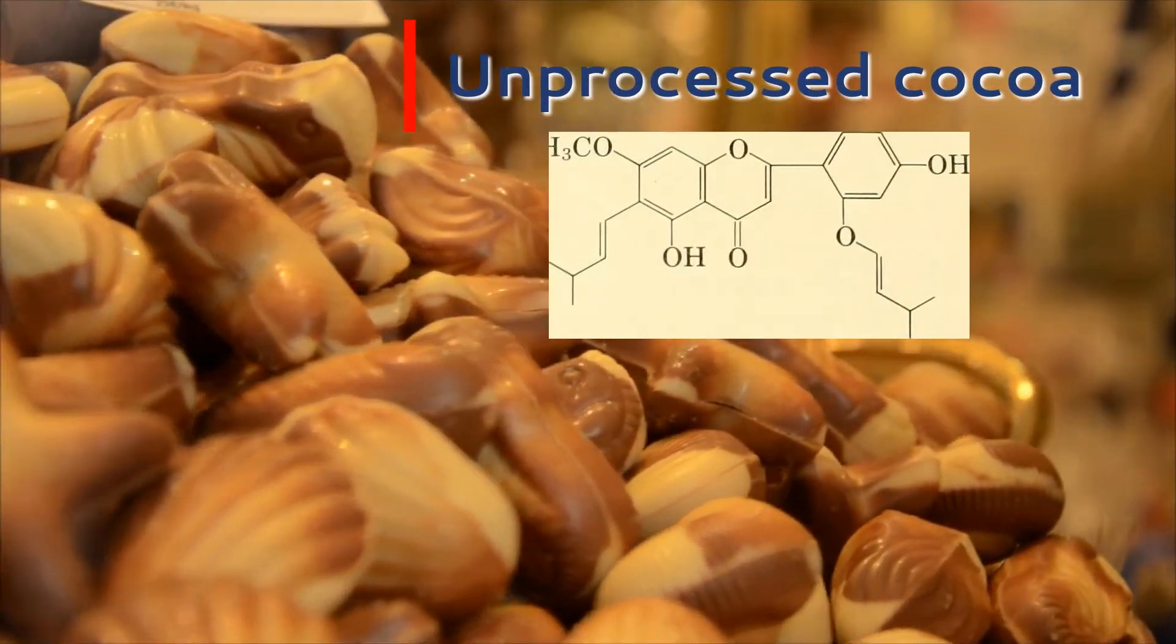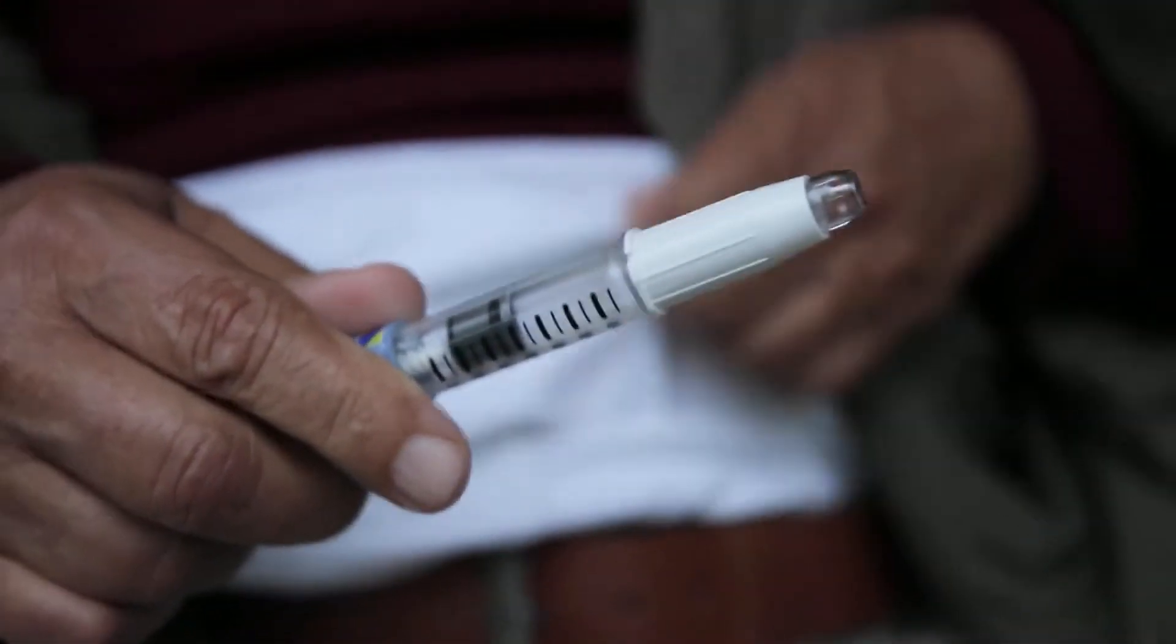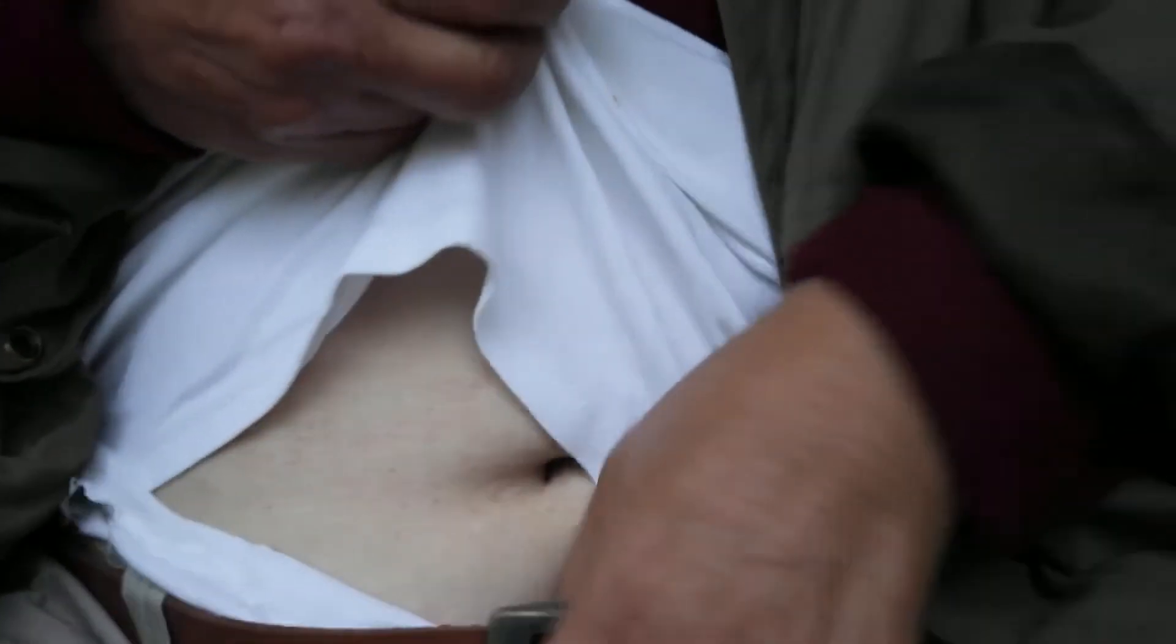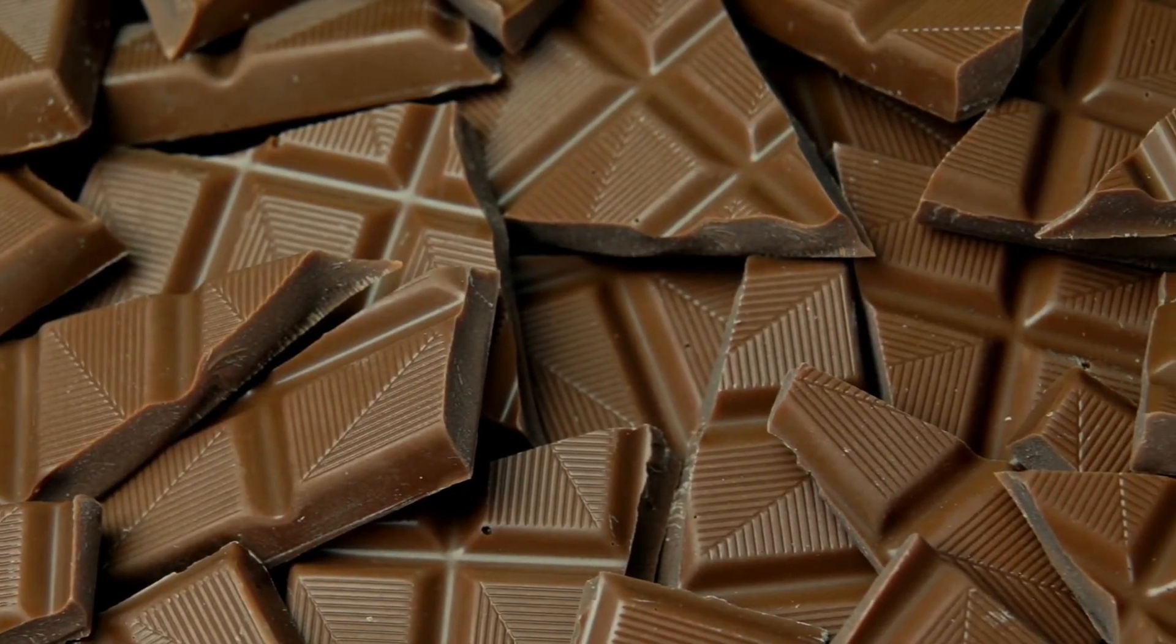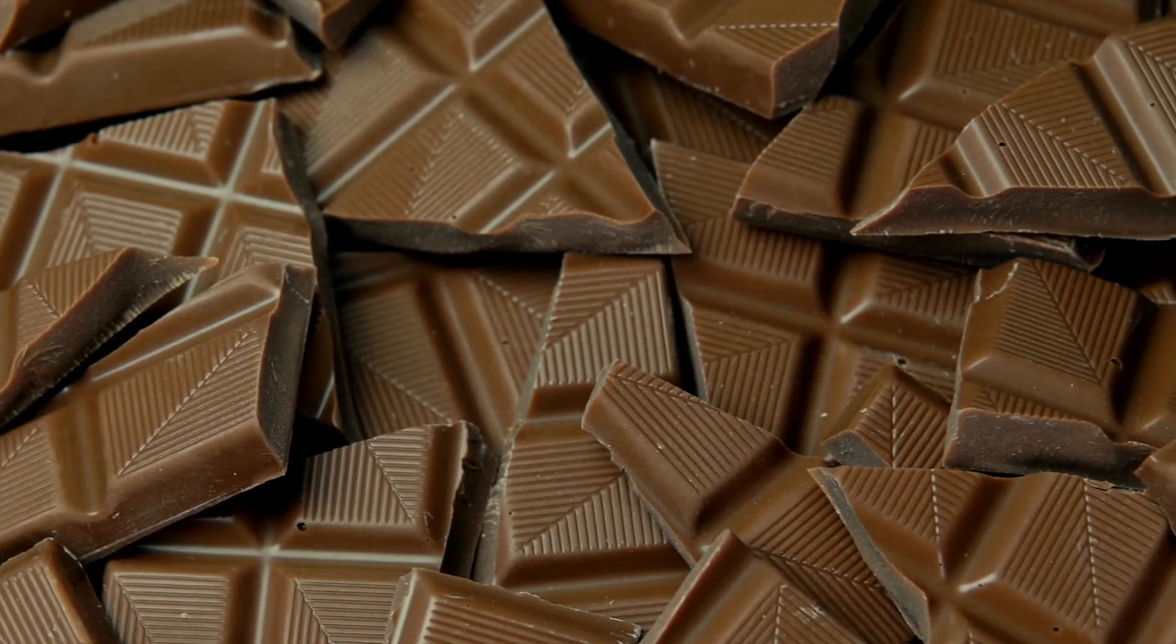Unprocessed cocoa is a rich source of flavonoids. One review found that cocoa consumption significantly decreased a marker of insulin resistance. It's worth noting that unprocessed cocoa is very different from chocolate and candy bars or traditional desserts. Unprocessed cocoa comes straight from the cacao plant with no sugar added.